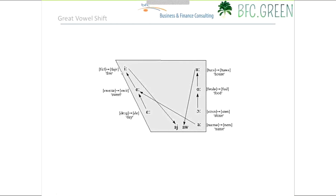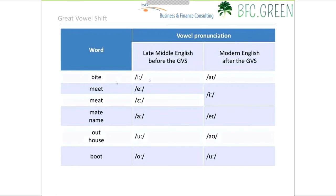You can hear and feel these vowel shifts: 'sueta' became 'sweet'; 'hus' became 'house'; 'poda' became 'food.' Further examples include 'beat' to 'bite,' 'mate' to 'meet,' 'mata' and 'nama' to 'mate' and 'name,' and 'ut' and 'hus' becoming 'out' and 'house,' and 'boat' becoming 'boot.'